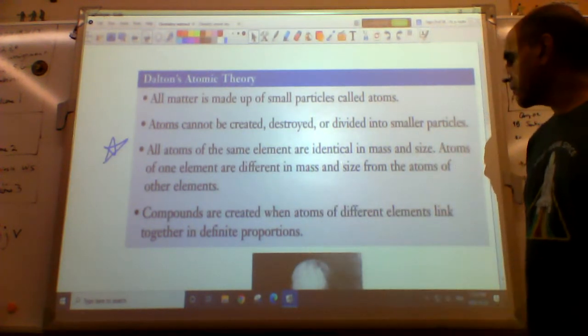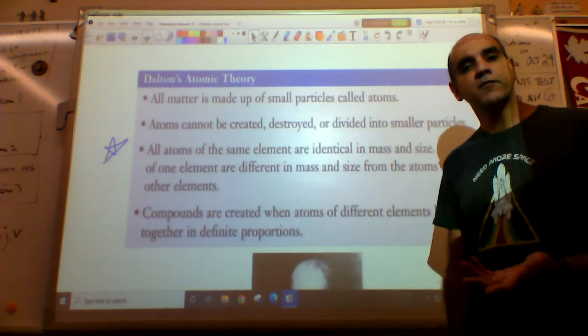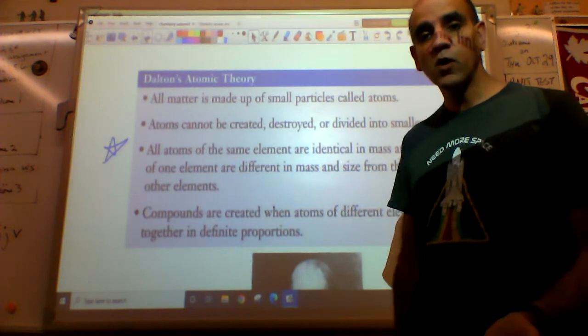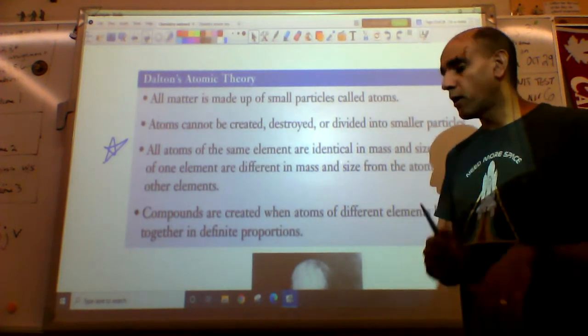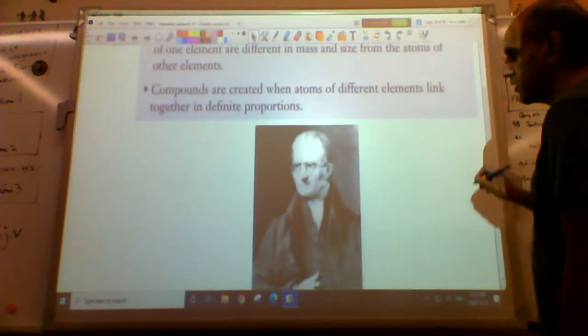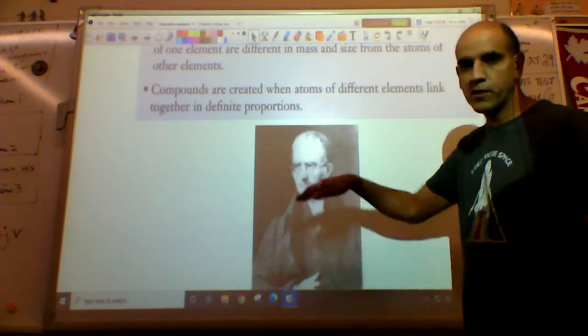And finally, compounds are created when atoms of different elements link together in a definite fixed proportion. So compounds are made of different elements combined, like H2O, two hydrogen atoms, one oxygen atom combined together, bonded together. And then, yeah, there's a picture of Dalton. Classic chemist, has a really big forehead.